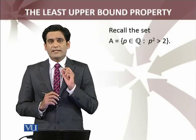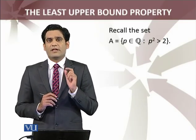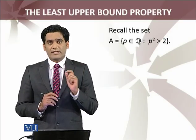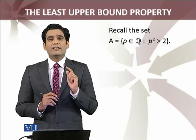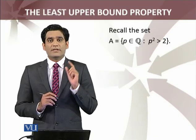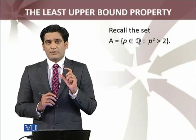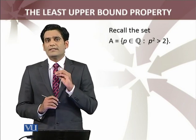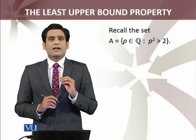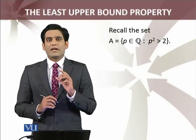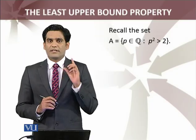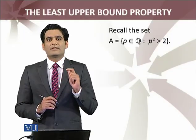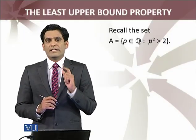Let me recall the set we have discussed: the set of rational numbers greater than 2. I have proved that this set does not have any rational largest member. In other words, we had proved in previous modules that the set of rational numbers does not satisfy the least upper bound property.